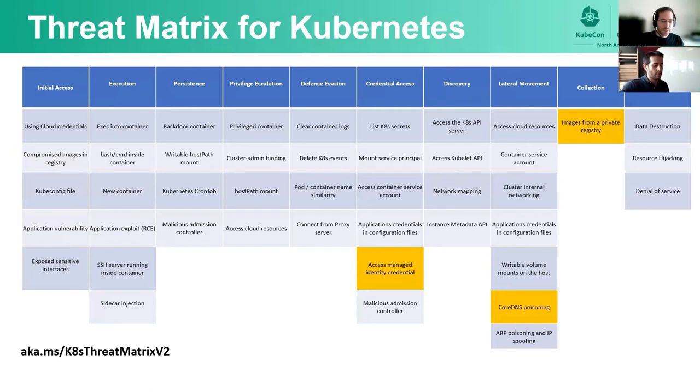Let's see three examples. One is access managed identity credential. Second, CoreDNS poisoning. And third, images from a private registry.